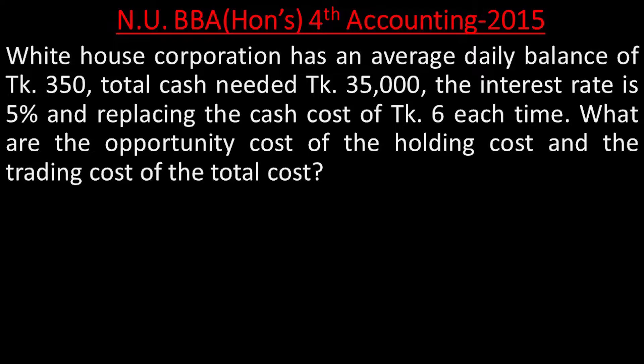Now I will ask a question. The accounting group is 25 years old. White House Corporation has an average daily balance of $350. Every day more than $90. The total cash needed is more than $35,000. The interest rate is 5%, and replacing the cash costs $6,000 each time. Every day the cash paid is $2,000.